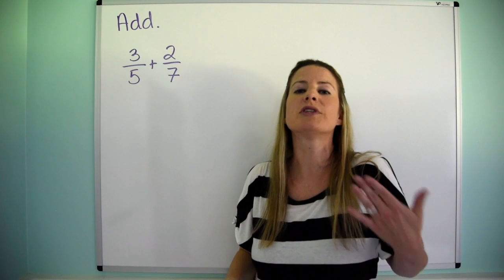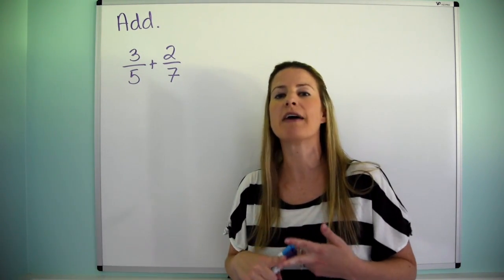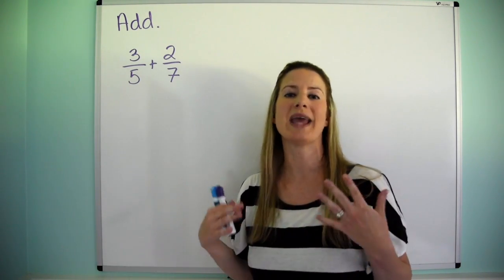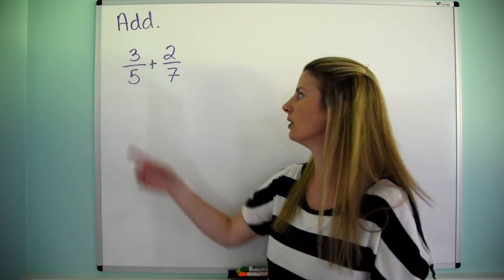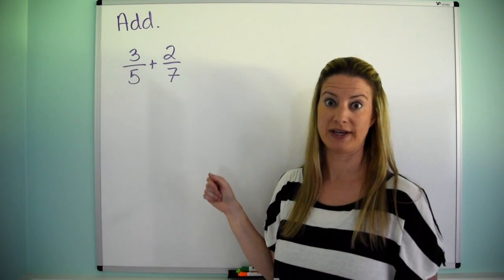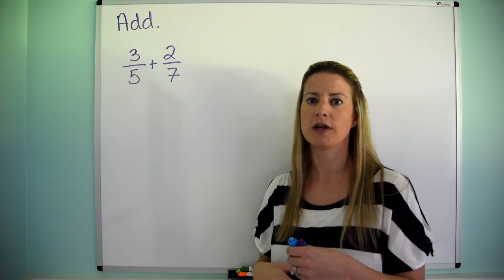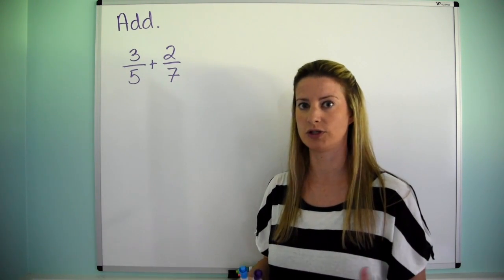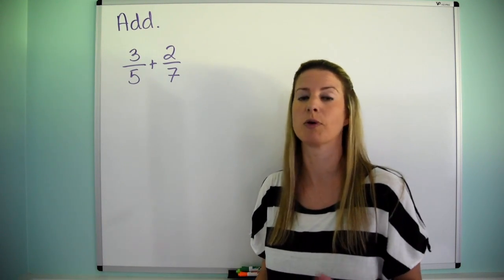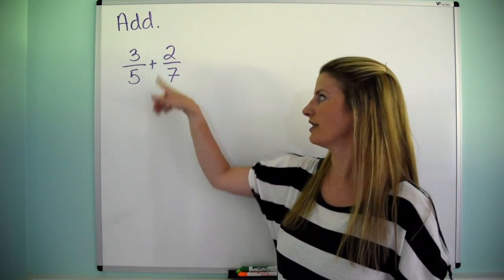Now remember, we're allowed to do that because 7 over 7 and 5 over 5 is 1, so we haven't actually changed the value of 3 fifths or 2 sevenths. Just like 1 half, 2 fourths, you know what I mean? They all have the same value, which is 0.5 if we think of it in a decimal form or 1 half. So that's why this is okay.